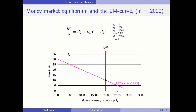Let's look at some numerical values. We assume parameters D1 and D2 are equal to 1 and 100, D0 is equal to 1000, Y is equal to 2000, M is equal to 2000, and the price level is normalized to 1. This gives us a vertical real money supply line at the value of 2000, and a downward sloping money demand curve, reflecting the negative relationship between the interest rate and money demand.